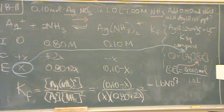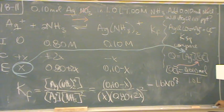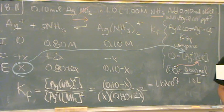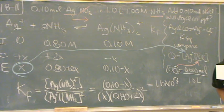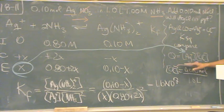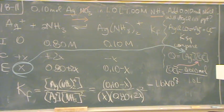Do you need me to write down the values, or they're in your text if you want to find them? Page 763. What they end up finding is that Q is less than K. If Q is less than K, will it precipitate? No.